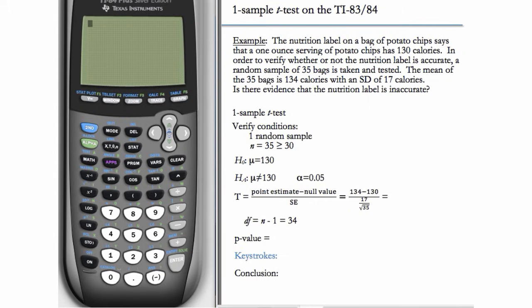So we start with this example. The nutrition label on a bag of potato chips says that a one-ounce serving has 130 calories. In order to verify whether or not the nutrition label is accurate, a random sample of 35 bags is taken and tested. The mean of the 35 bags is 134 calories with an SD of 17 calories. Is there evidence that the nutrition label is inaccurate?